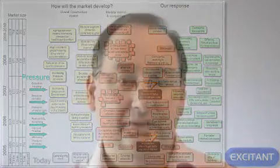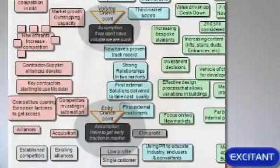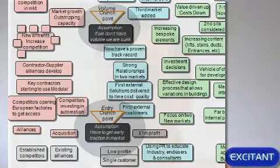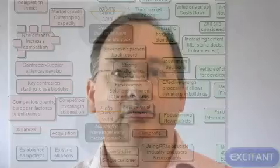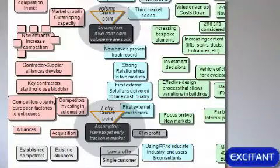Different parts of the market behave in different ways. As they built this they could see two crunch points. One is in the forthcoming year where they have to get early traction in the market — if they don't, their view was that other competitors will come in and gain the advantage. There's another crunch point in 2007 where the assumption is: if we don't have volume by now, we are sunk. So they built up a clear view of market development, key decision points, how they need to respond, and the assumptions they're making.